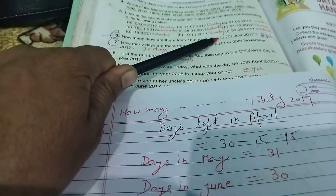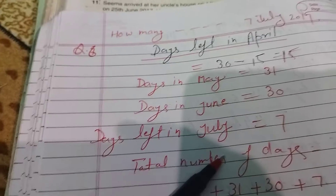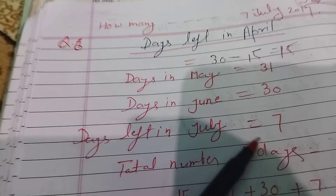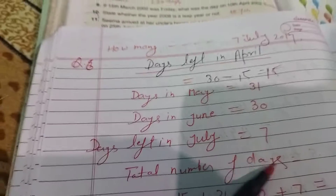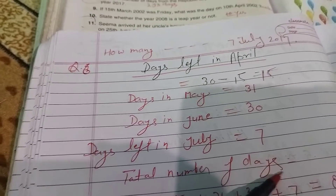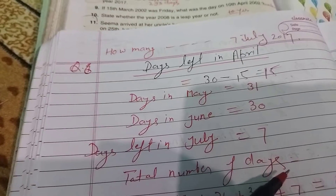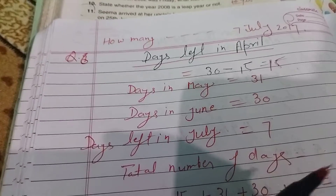Because from 16th April, 17th to 7th July. How many days are left in July? Up to 7th July — you will have to write how many days are left in July.